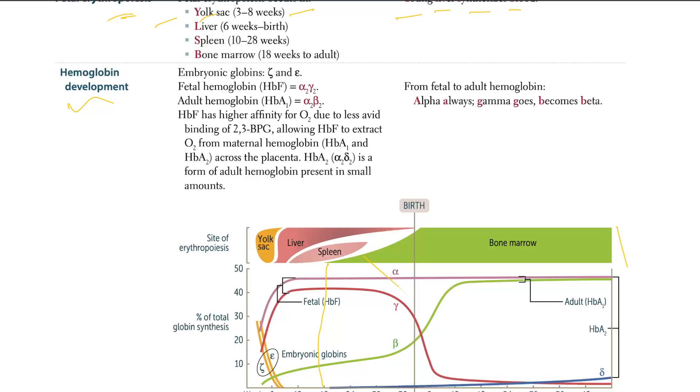Now let's talk about the fetal hemoglobin, which is HbF, HbF, alpha 2, gamma 2, right? And let's talk about the adult one, which is HbA1, alpha 2, beta 2.